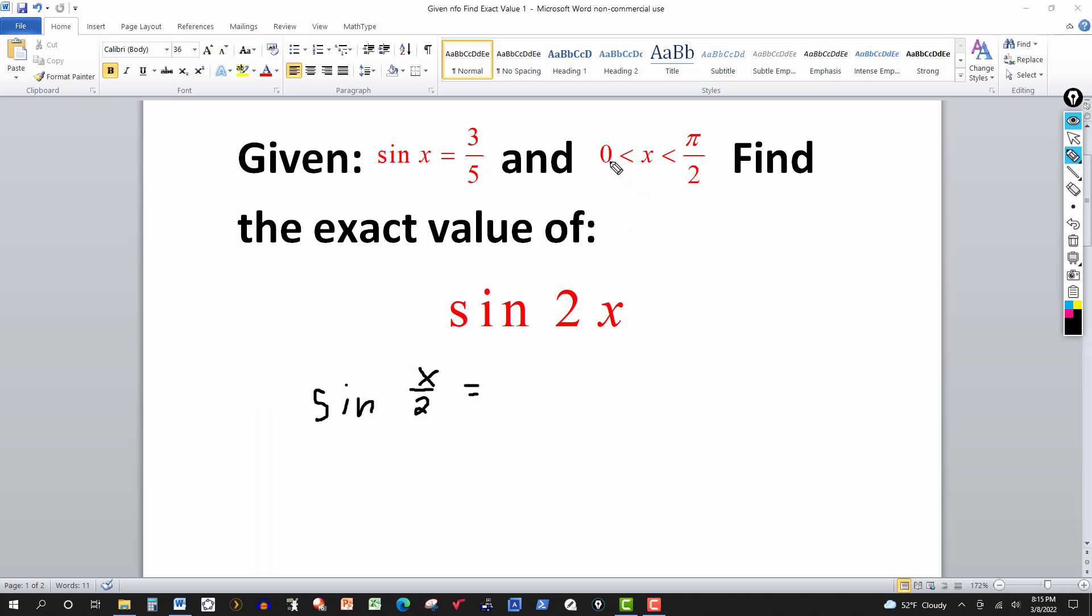We'll remind you that if x is between 0 and pi over 2, then x over 2, if I divide both sides by 2, I'll get x over 2 is between 0 and pi over 4. So it's still going to be in the first quadrant. So in the first quadrant, the sine of any angle will be positive.